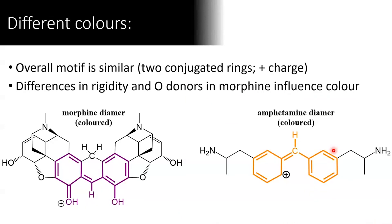We can also get a sense as to why there are different colours being formed in the reaction. The overall dimerisation motif is similar whether you look at morphine or amphetamine, but in the case of morphine it's a lot more rigid — it's held together in this shape with oxygen atoms feeding electron density into the core, which gives you a purple colour. Looking at amphetamine, overall it's less rigid, and we have fewer atoms feeding electron density into the core, so this one gives you an orange colour. I've also redrawn the structure so you can see the conjugation more clearly by shifting the positive charge — in reality that positive charge is shared all across the core.